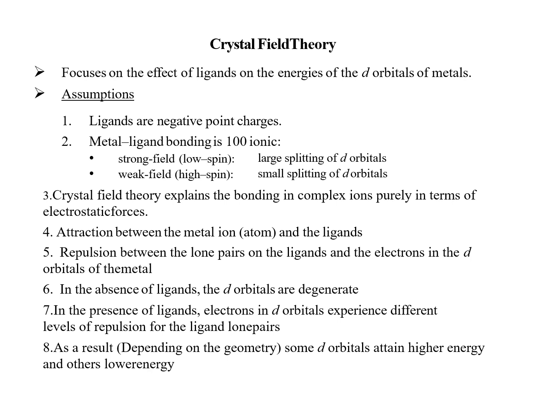The crystal field theory explains the bonding in complex ions purely in terms of electrostatic force: the attraction between the metal ion and the ligands, and the repulsion between the lone pair on the ligands and the electrons in the d orbitals of the metal. In the absence of the ligand, the d orbitals are degenerate. In the presence of ligands, the electrons in the d orbitals experience different levels of repulsion from the ligand lone pairs. As a result, depending on the geometry, some d orbitals attain higher energy and others are at lower energy.